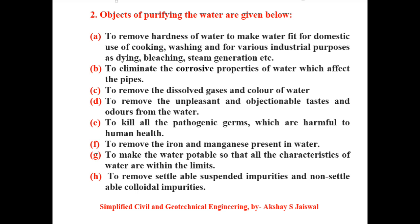Point B: To eliminate the corrosive properties of water which affect the pipes. Point C: To remove the dissolved gases and colour of water. Point D: To remove the unpleasant and objectionable taste and odours from the water. Point E: To kill all pathogenic germs which are harmful to human health. Point F: To remove the iron and manganese present in water. Point G: To make the water potable so that all the characteristics of water are within the safe limit. Point H: To remove the settleable suspended impurities and non-settleable colloidal impurities.